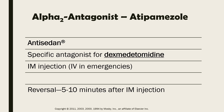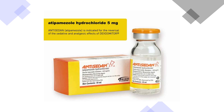Another alpha-2 antagonist is atipamezole, with the brand name Antisedan. It is a specific antagonist for dexmedetomidine, available as an IM injection — IV in emergencies — with quick reversal at 5 to 10 minutes after IM injection. According to its label insert, it is indicated for the reversal of the sedative and analgesic effects of Dexdomitor (dexmedetomidine hydrochloride). Antisedan competitively inhibits the alpha-2 adrenergic receptor and rapidly reverses the effects of Dexdomitor within 5 to 10 minutes after IM injection. It is available for use in canines.